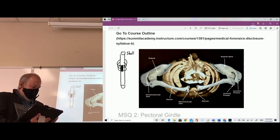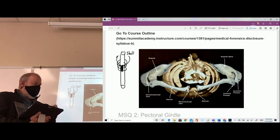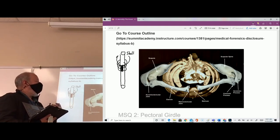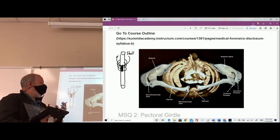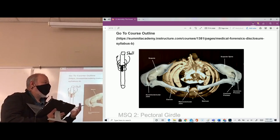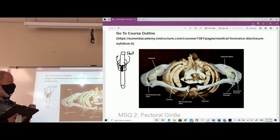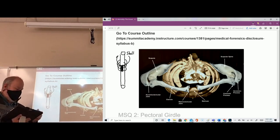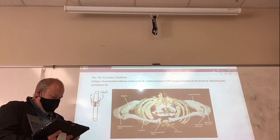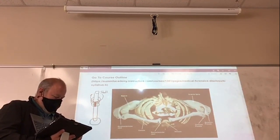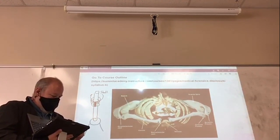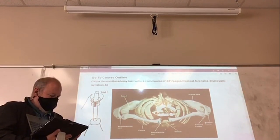We had the pectoral girdle, and a girdle is a circle of bone — if something engirdles something, it encircles it. So a girdle is a circle. As far as the pectoral girdle and the pelvic girdle go, these are circles of bone, and attached to these circles of bone we have limbs. This is how we divided up our skeletal system.